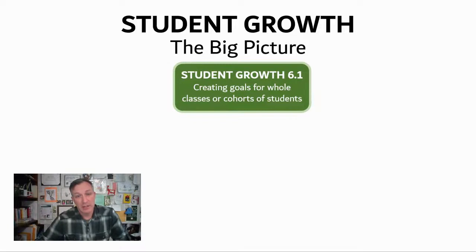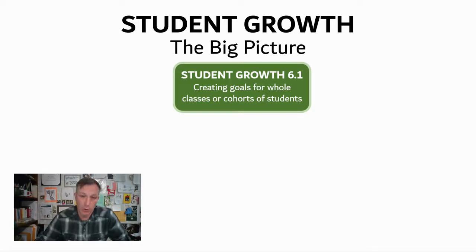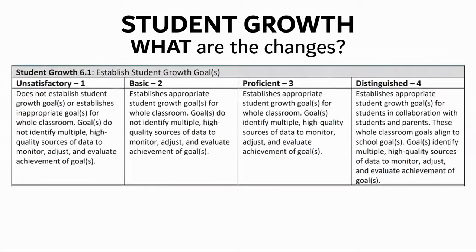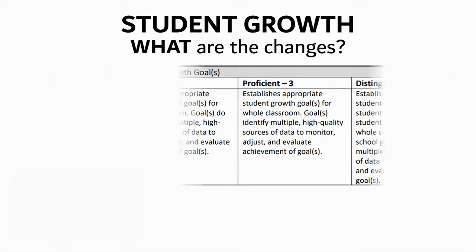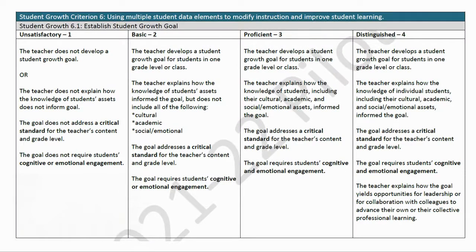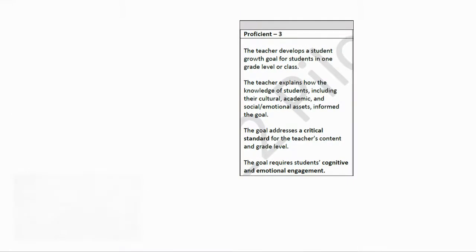To help us understand the goal setting revisions, we're going to focus in on student growth 6.1, which is the whole class or whole cohort goal setting. Let's begin by looking at what the changes are, starting with the student growth goal rubrics established long ago. For student growth 6.1, whole class goals, let's focus in on the language of proficient for the previous version, and also for the new version.